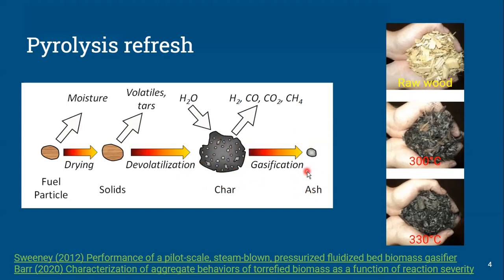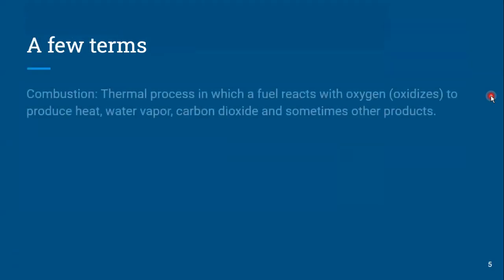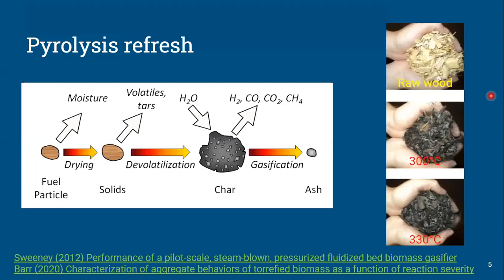If we take that on to gasification or combustion, we produce gases or heat, and in the end we're left with just a little bit of ash. You can see visually as we take you through a few different stages of pyrolysis — in this case, we're looking at mild pyrolysis or torrefaction. As temperature goes up, you can visually see that the level of devolatilization increases and we're left with more char.